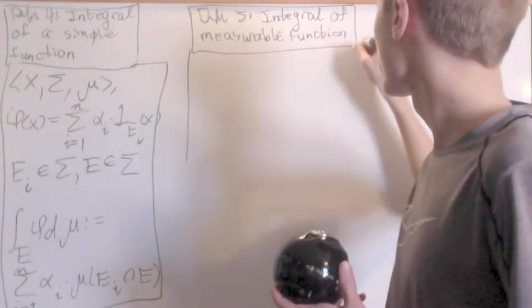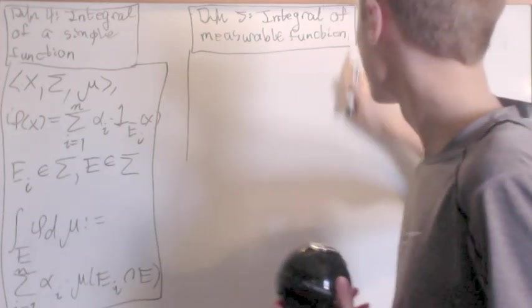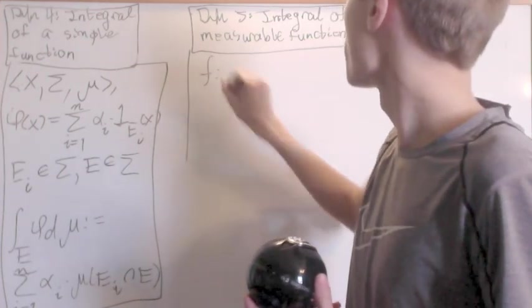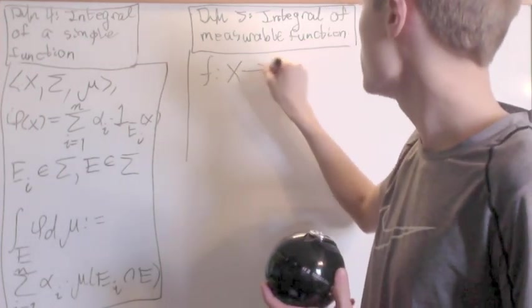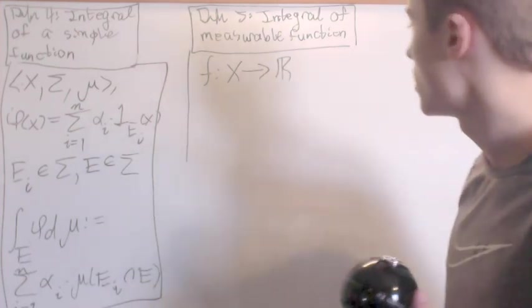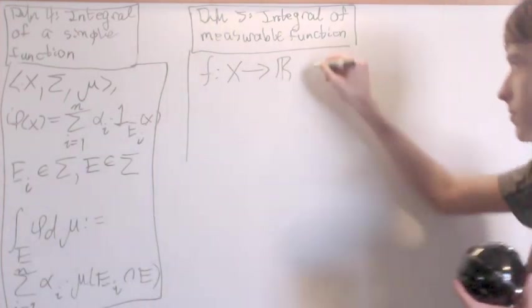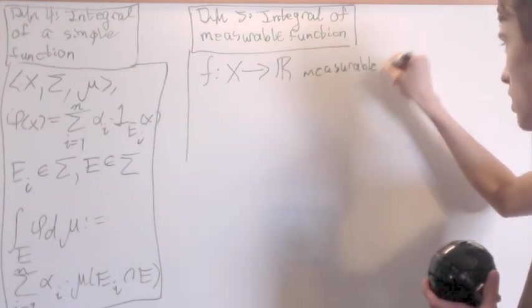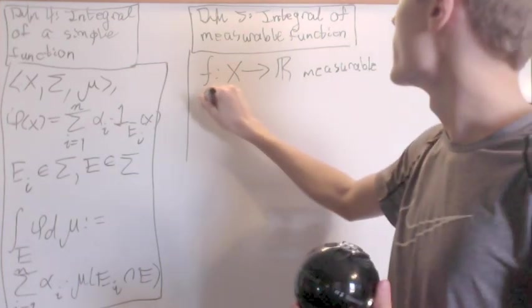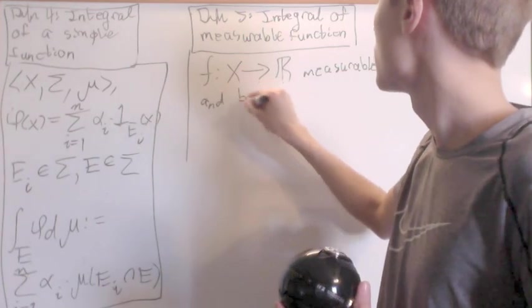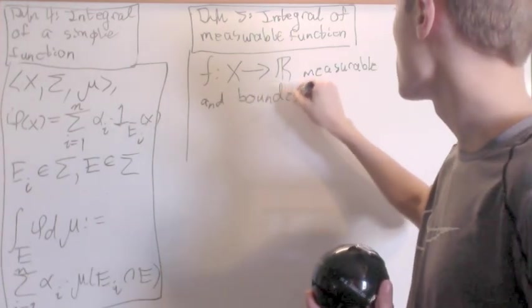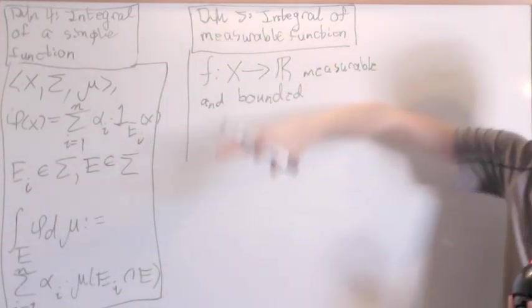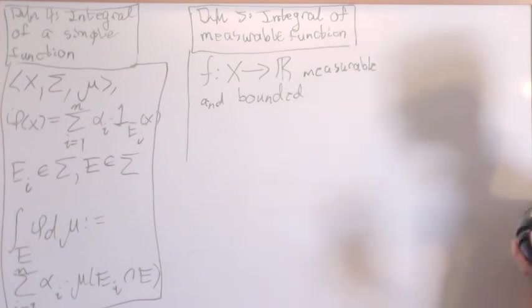How can we extend this even further? Well, what we do, so f, that brings you from x into r, it's measurable and bounded. Basically meaning that has an upper bound so that it doesn't skyrocket to infinity.